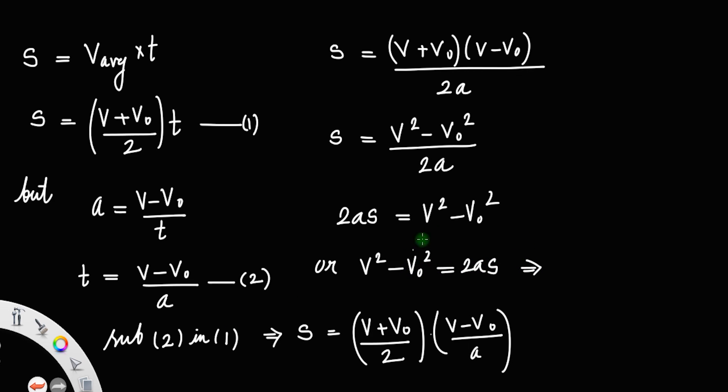You can take v₀² to the right. You will get v² equals v₀² plus 2as. So that's our third kinematic equation. Thanks.